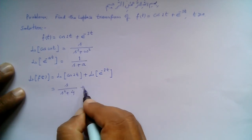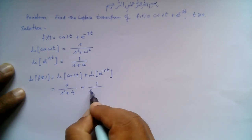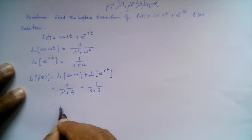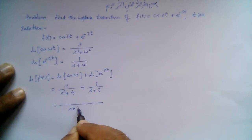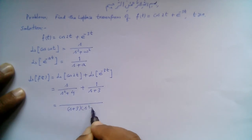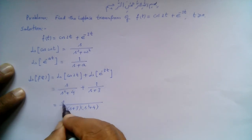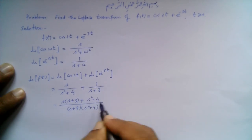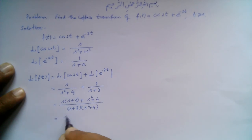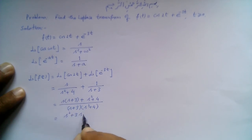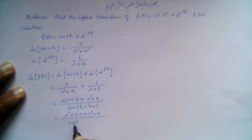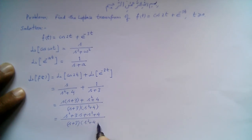Adding the second term, 1 over (s + 3), we combine the two fractions. The common denominator is (s + 3)(s² + 4). The numerator becomes s(s + 3) + (s² + 4), which expands to s² + 3s + s² + 4, all divided by (s + 3)(s² + 4).